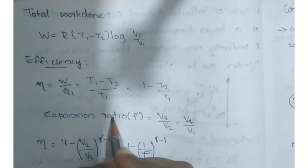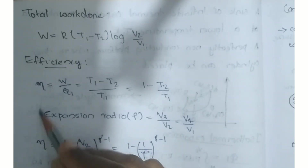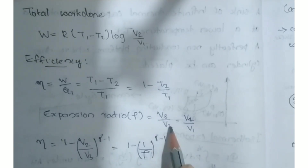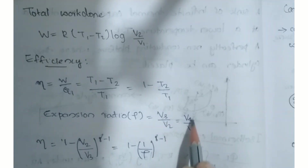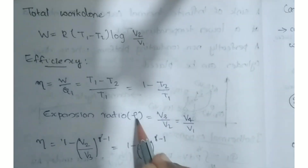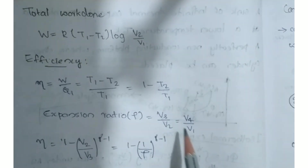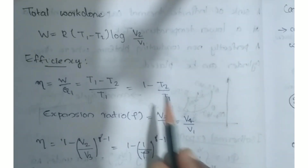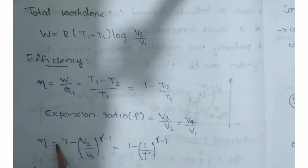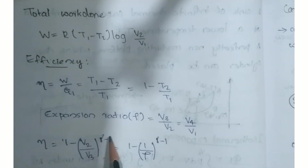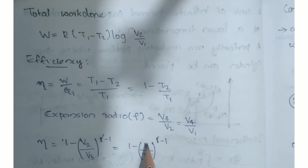We are going to learn the expansion ratio. The value of V3/V2 is equal to V4/V1. This is the expansion ratio. Eta equals 1 minus (V2/V3) raised to (gamma minus 1), which equals 1 minus 1 divided by R raised to (gamma minus 1).